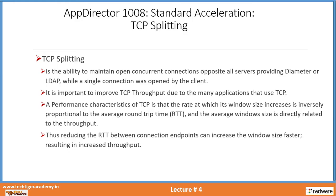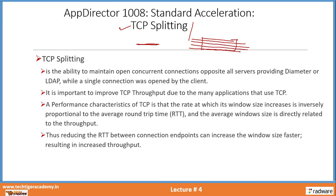A very important feature of standard acceleration is TCP splitting, which actually helps a lot with throughput. TCP splitting is the ability to maintain open concurrent connections to all servers providing diameter or LDAP, while a single connection was opened by the client. So one connection comes in, and it gets split and tiered down to the servers. It is important to improve TCP throughput, and because UDP does not support splitting, any application running on top of TCP can take advantage of TCP splitting.